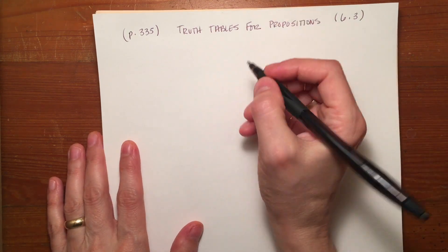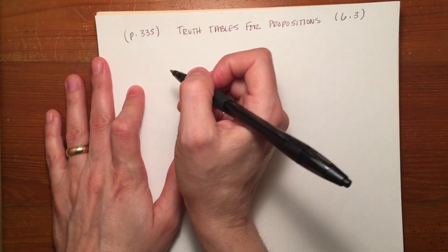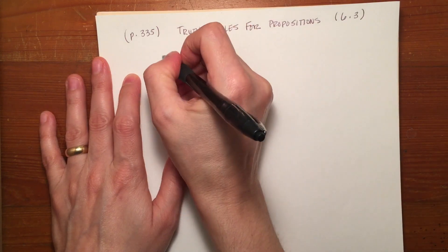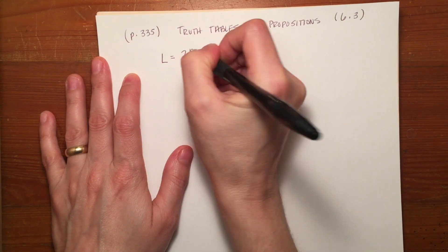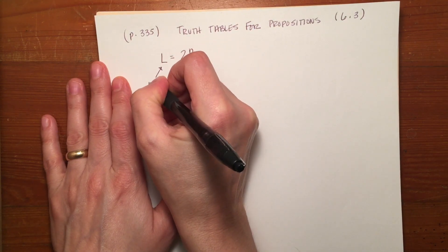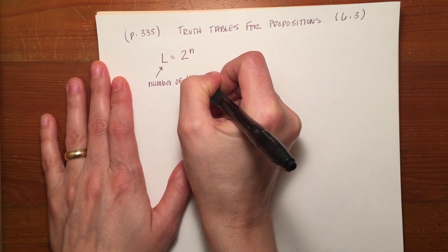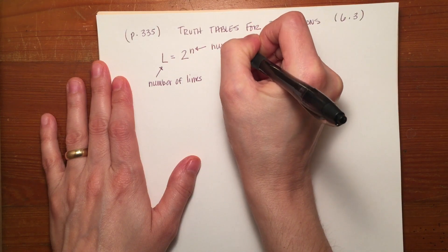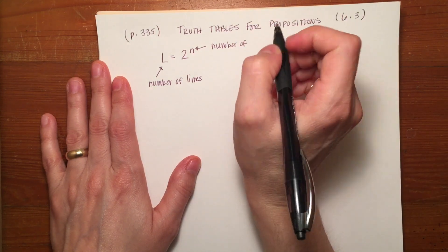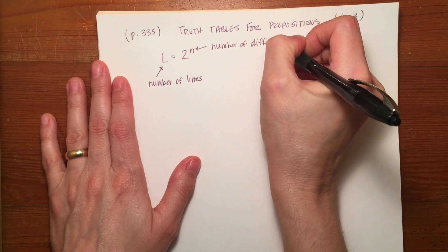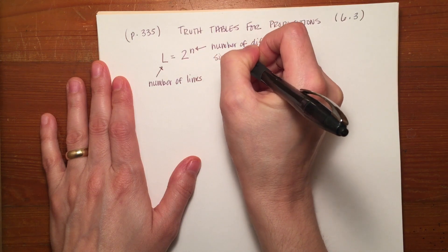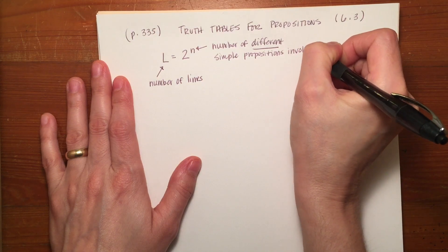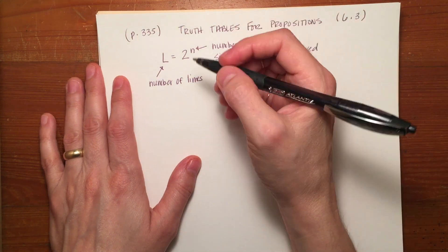So the very first thing you do when you're constructing a truth table is to determine the number of lines that you need to write. There's a formula for that: it's L equals 2 to the N. L stands for the number of lines that you'll calculate, and N stands for the number of different simple propositions involved. This always works in multiples.